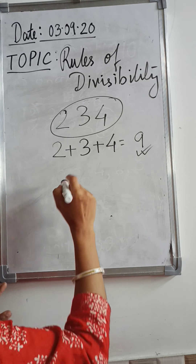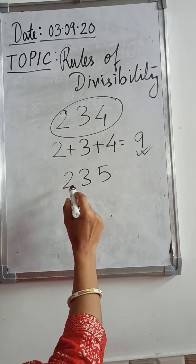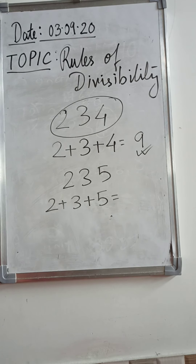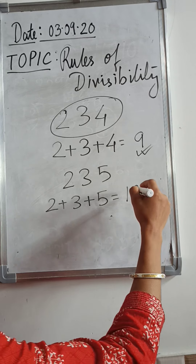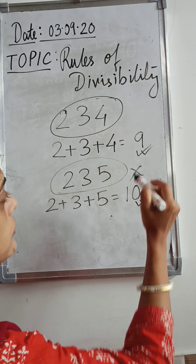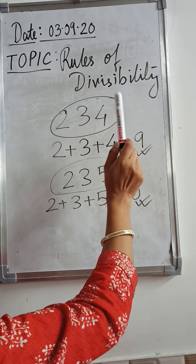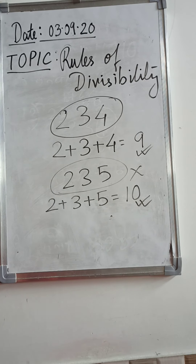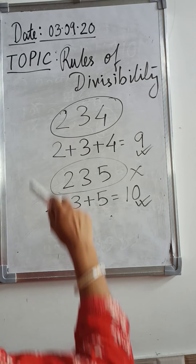Let's test another number: 235. Adding the digits: 2 + 3 + 5 = 10. Since 10 is not divisible by 3 — it doesn't come in the table of 3 — so 235 is not divisible by 3. Always remember: to check divisibility by 3, add the digits. If the sum is divisible by 3, the whole number is divisible by 3; if not, the number is not divisible by 3.